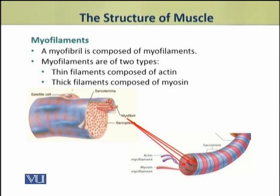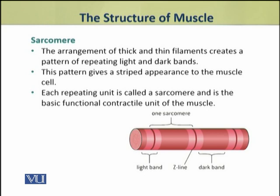These myofilaments are of two types: first, thin filaments which are made up of protein actin; and second, thick filaments which are composed of protein myosin.